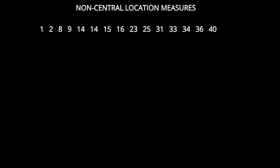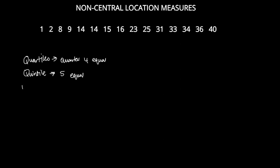There are different types of non-central location measures. Quartiles means we're dividing our data into quarters or four equal parts. Quintiles means we're dividing our data into five equal parts, and deciles mean we're dividing our data into 10 equal parts.